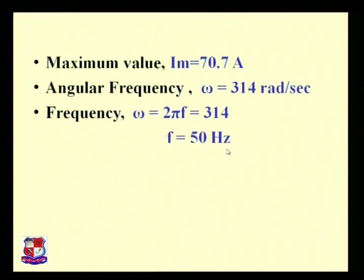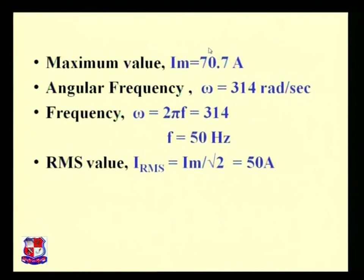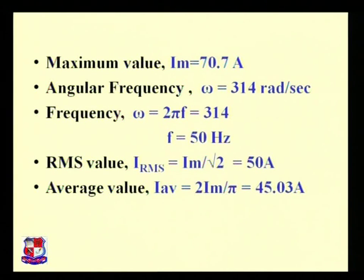Now for RMS value: I_rms = I_m divided by root 2. The value of I_m is 70.7 ampere, so putting 70.7 divided by root 2, we get the RMS current equal to 50 ampere.